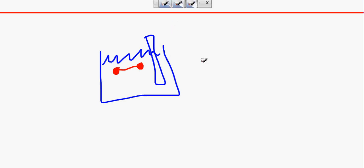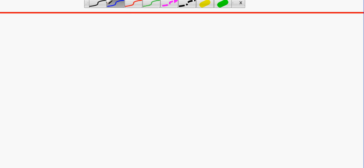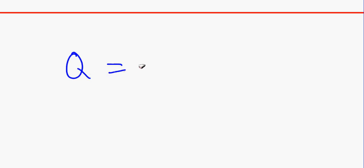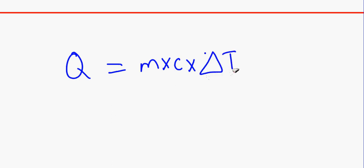There are a couple of things you need to know. You need to know how to calculate enthalpy change. Remember that q — which means enthalpy change — equals m, which is the mass of the solution, times c, which is the specific heat capacity of the solution, times delta T. Delta T: T stands for temperature, and delta means change — the range of temperature.